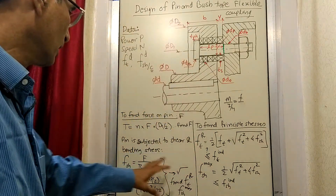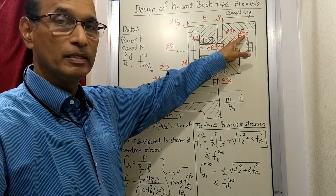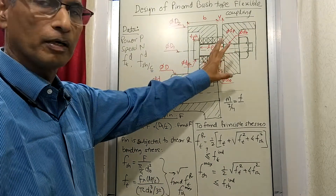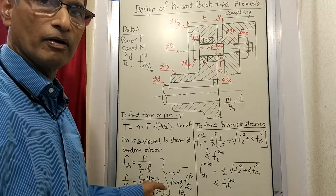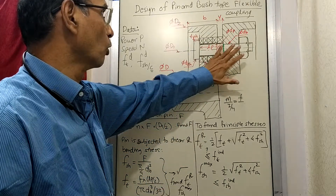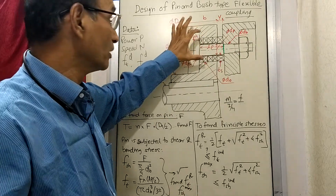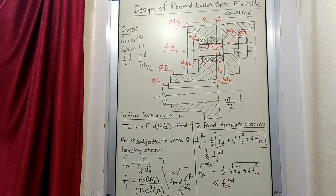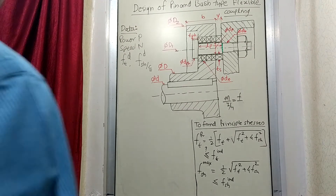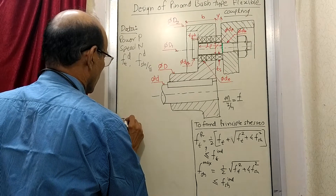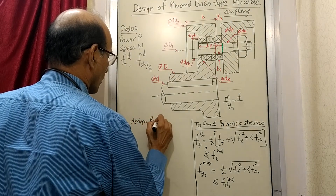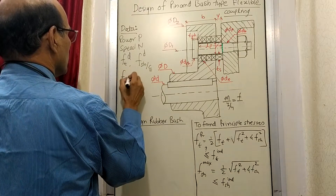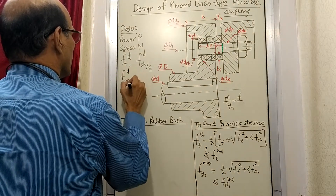If the principal and shear stresses are within limits, then all the assumed dimensions for db and other things are safe. At this stage we check for failure in shearing and failure in bending. Once this is done, most of the things are over and we move on to the design of the rubber bush.